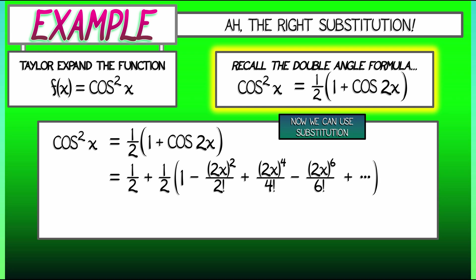Now, all I have to do is a little bit of algebraic simplification. The first term is 1 half plus 1 half. That's 1. The next term is a quadratic term, and that's going to be 1 half times negative 4x squared divided by 2. That yields negative x squared. What about the fourth order term? Well, I've got a, let's see, 2 to the fourth. That's 16x to the fourth divided by 2 times 4 factorial. That simplifies to be 1 third x to the fourth. Oh, that's really nice. I'll leave it to you to check that the next term is negative 2 over 45 times x to the 6th. This is so much nicer than the way we did it multiplying everything out.